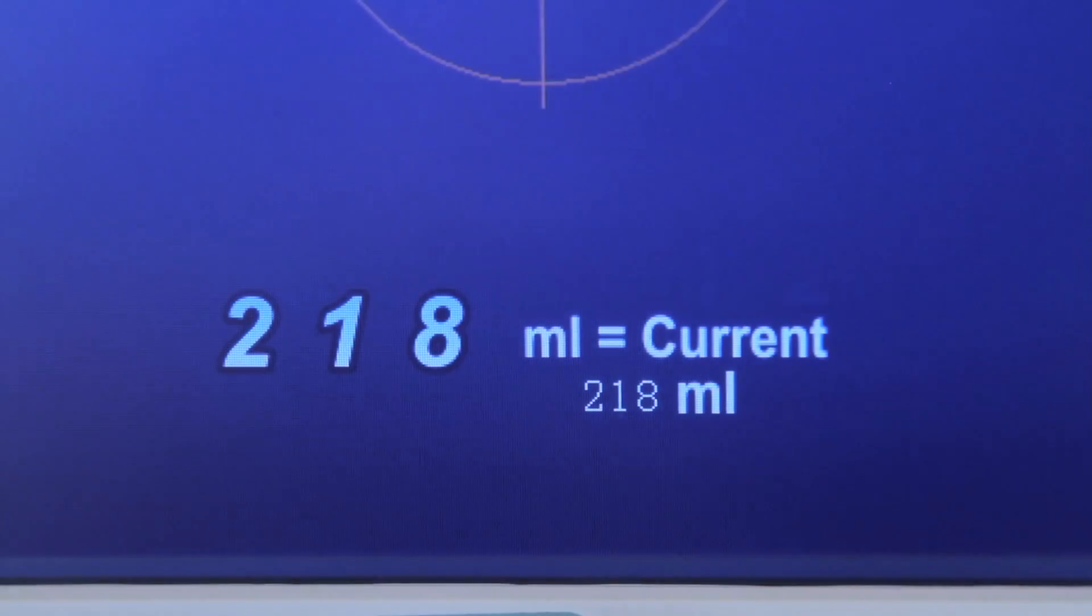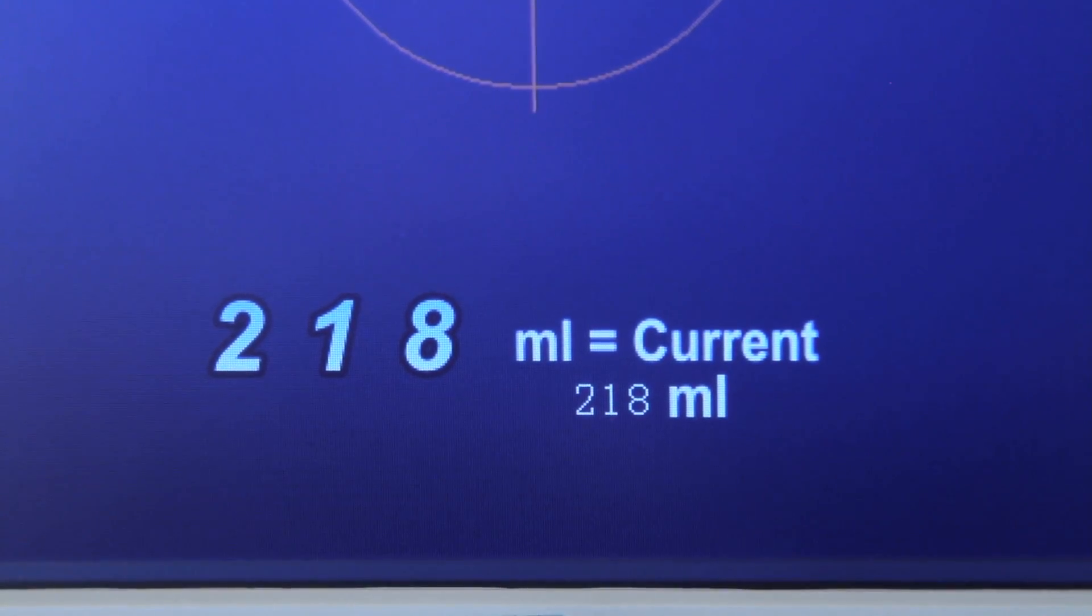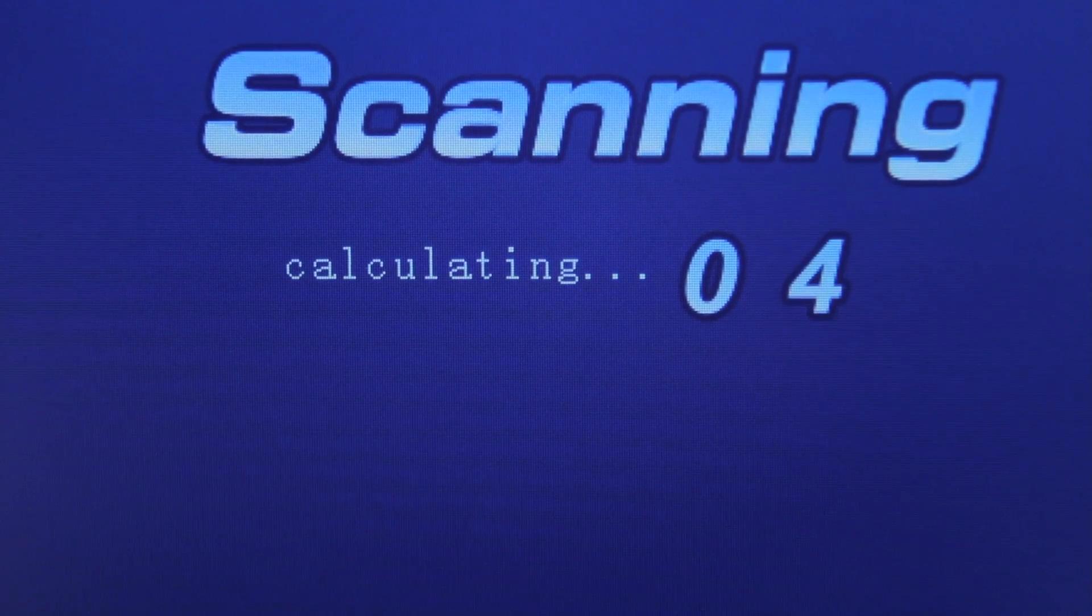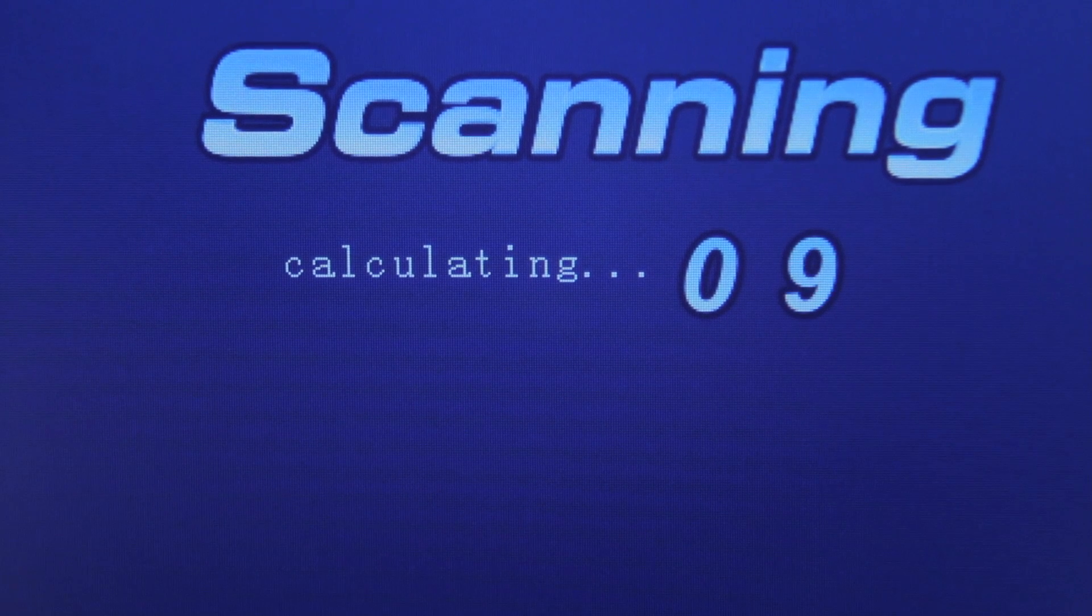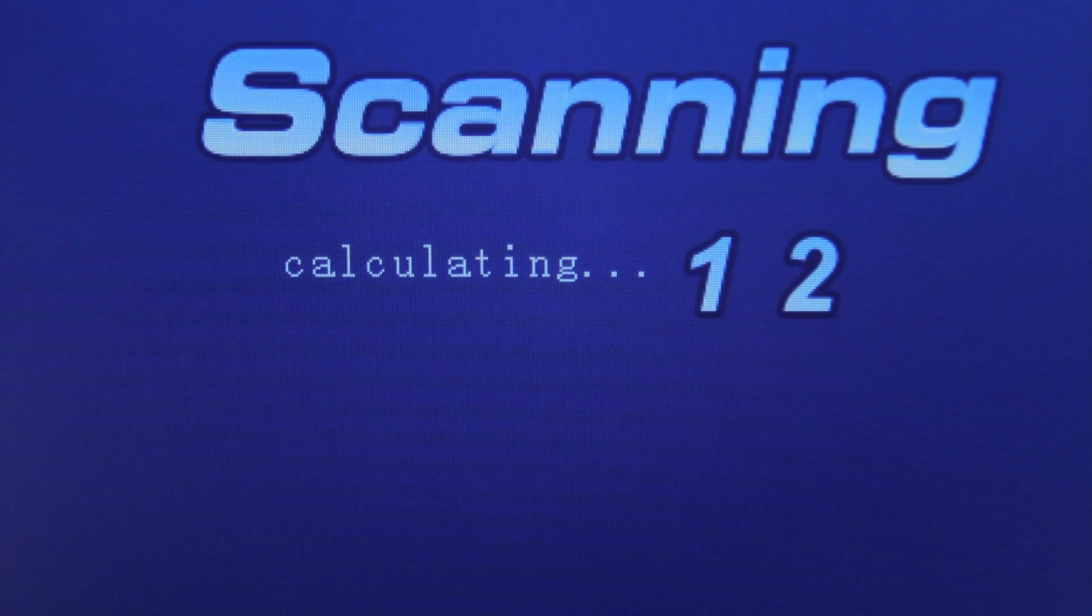The scanning progress will be displayed during the course of a scan. 1 slash 12 means it is scanning the first of 12 images. It will then enter calculating screen after the scan is complete. Calculating 12 means it is scanning the 12th image.